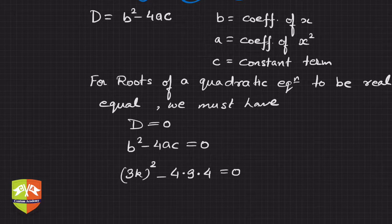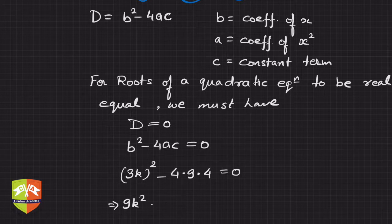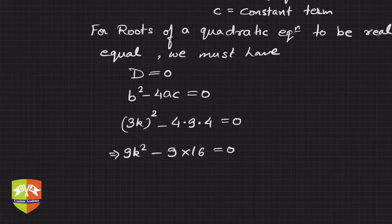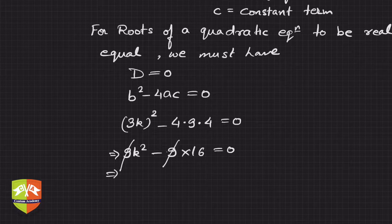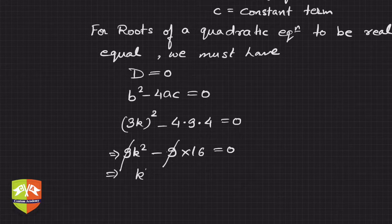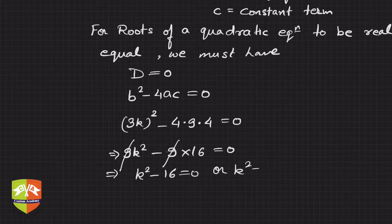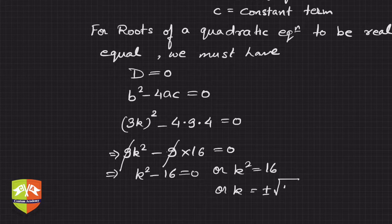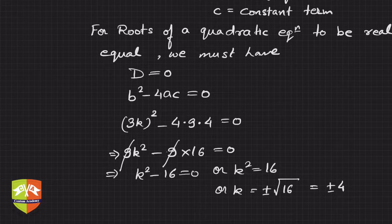Simplifying, we get 9k squared minus 144 equals zero. Since 9 is common to both terms, we can divide the entire equation by 9, giving k squared minus 16 equals zero. So k squared equals 16, and k equals plus or minus root of 16, which is plus or minus 4.